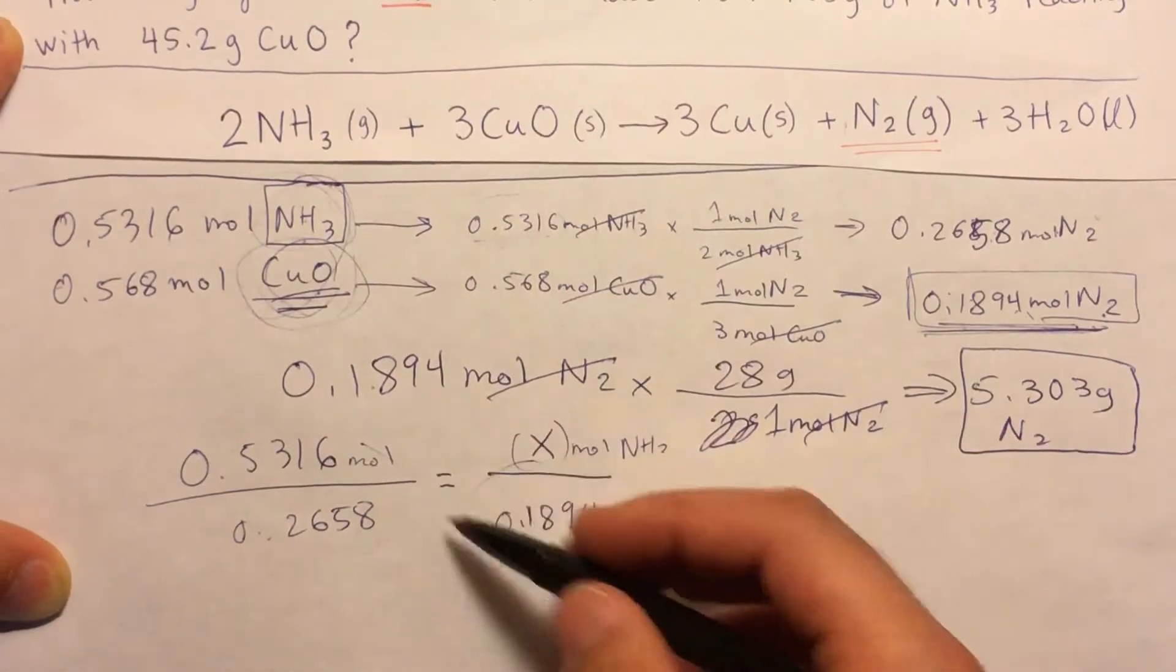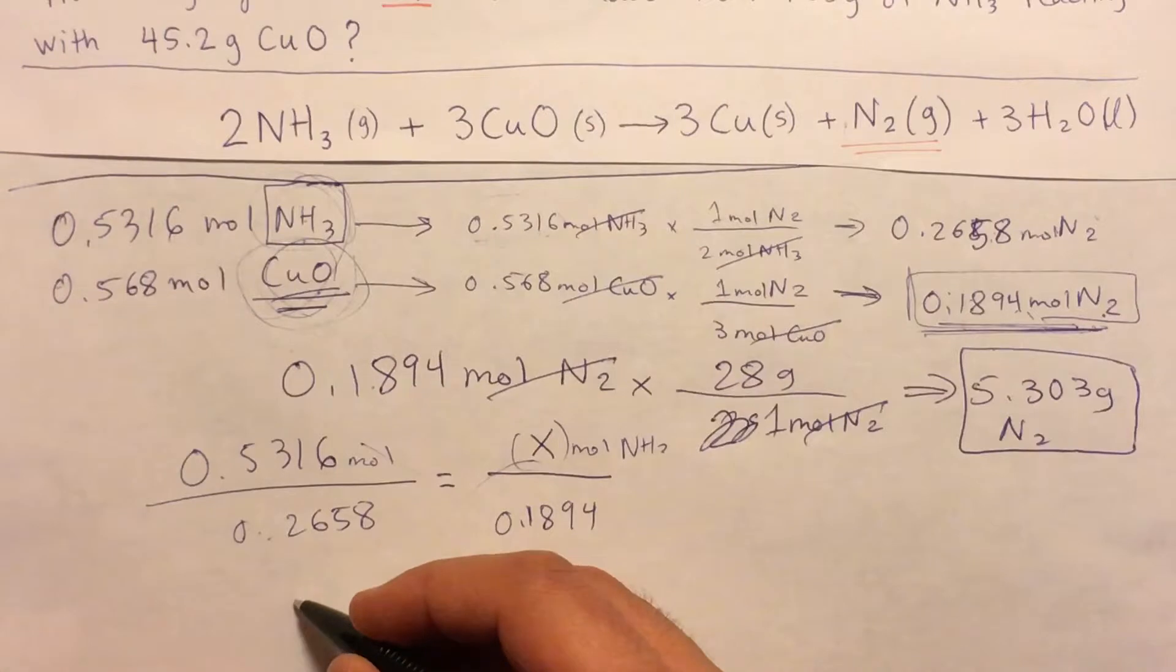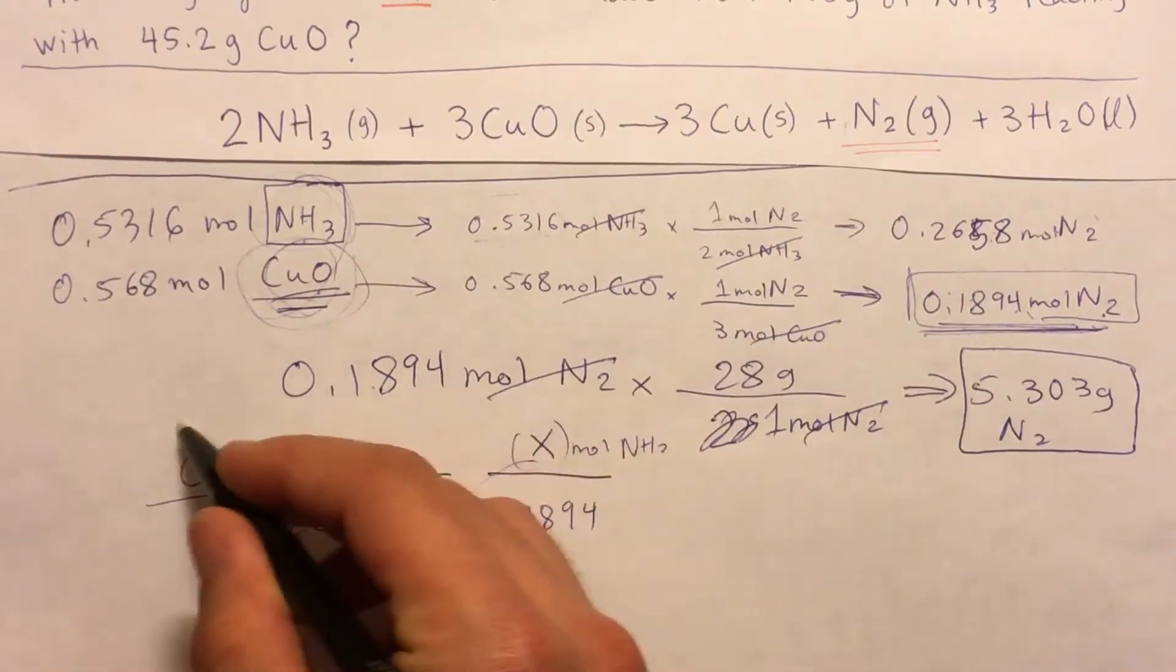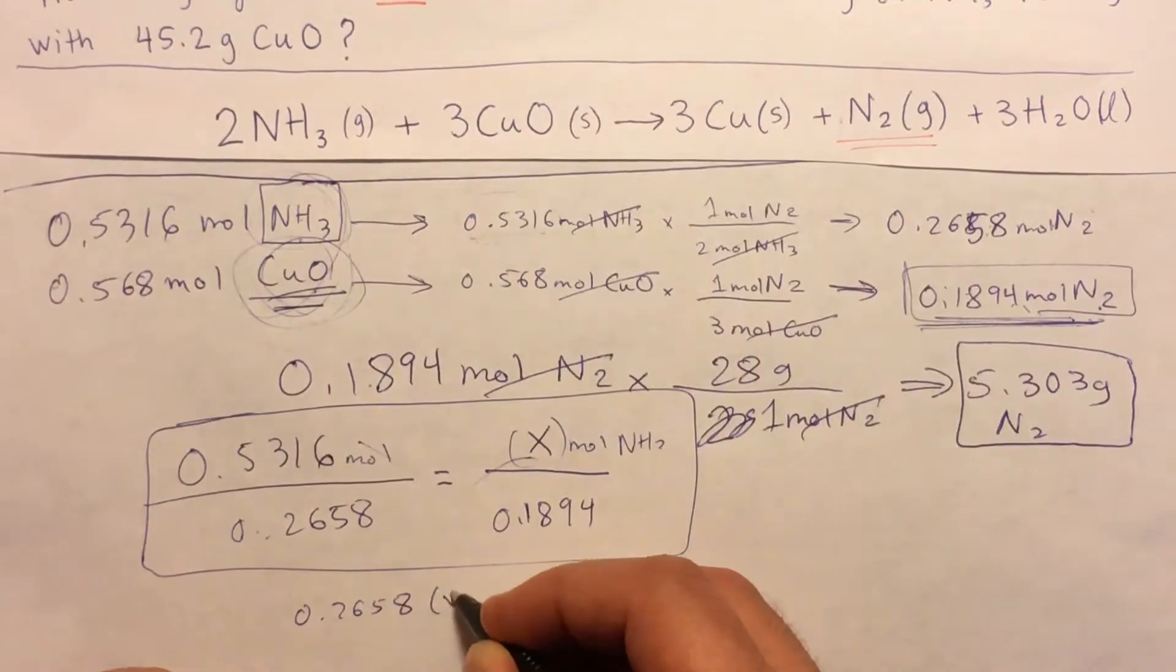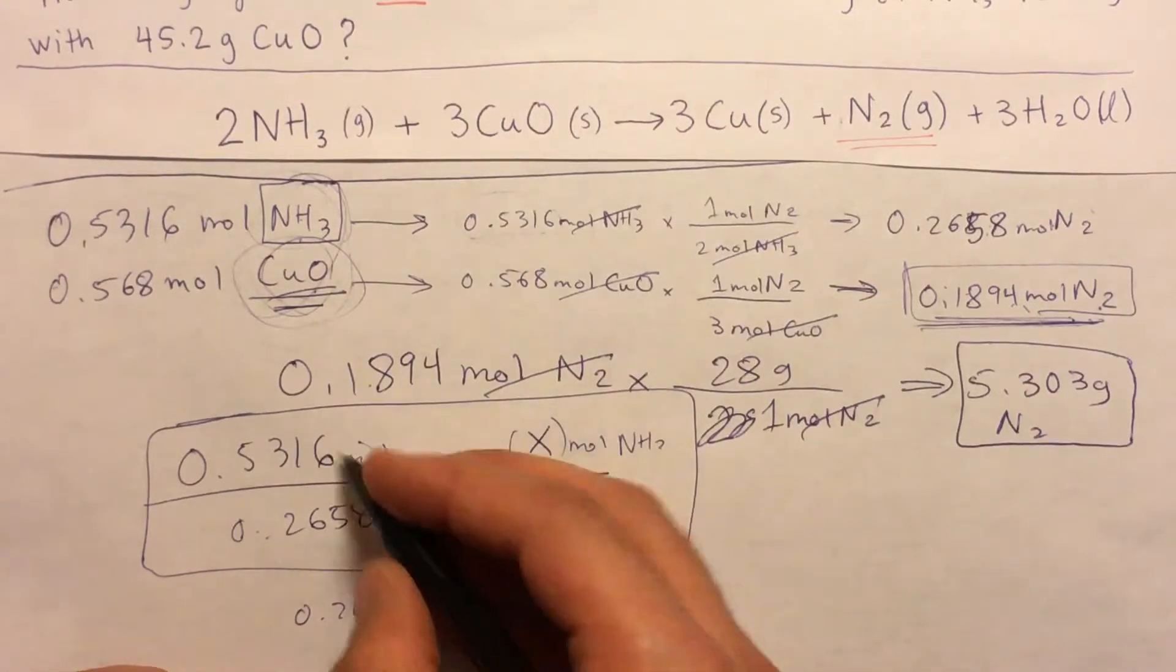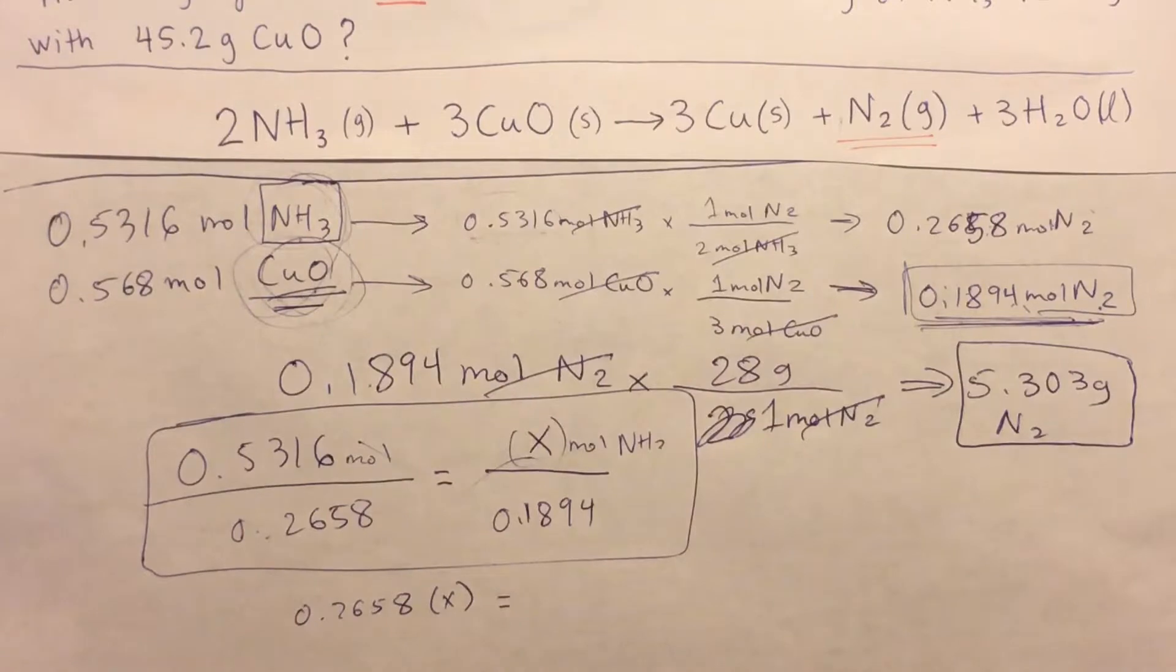So you just cross multiply, and then you would be left with, once you cross multiply this side here, you have 0.2658 times x, and that would be equal to these two multiplied by each other.